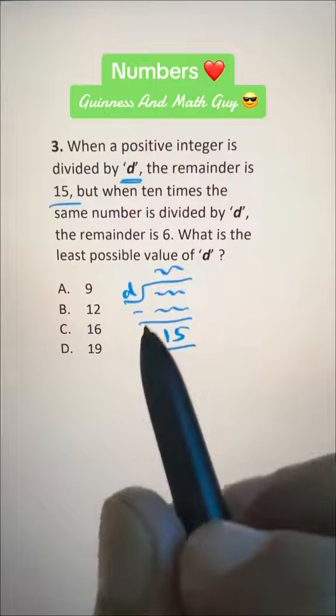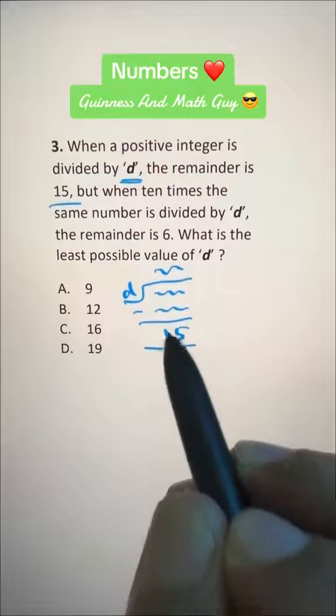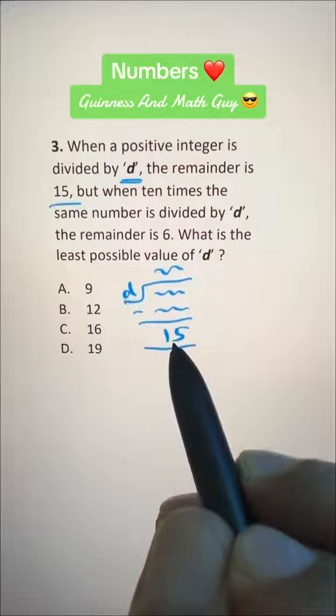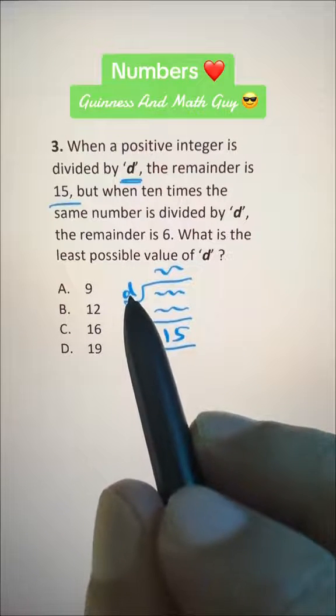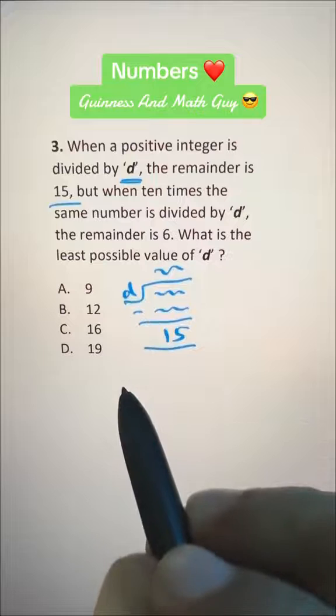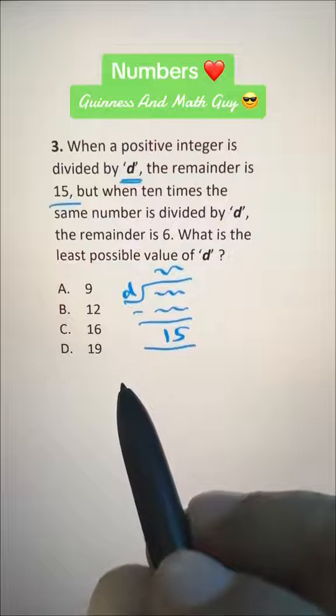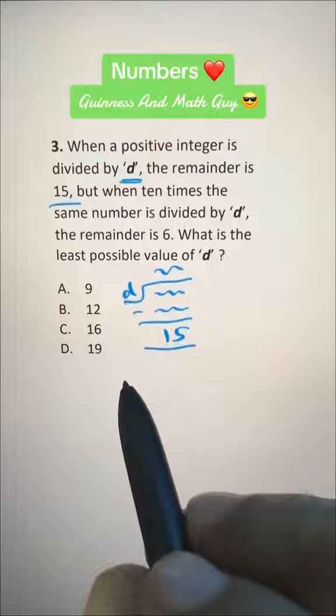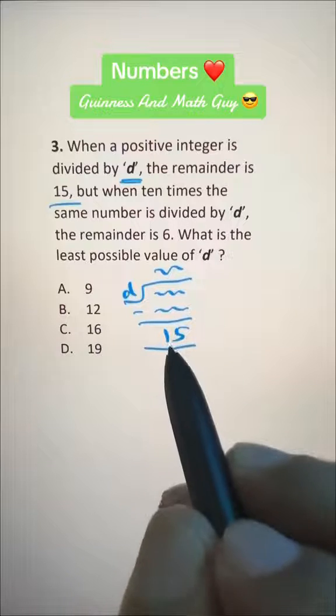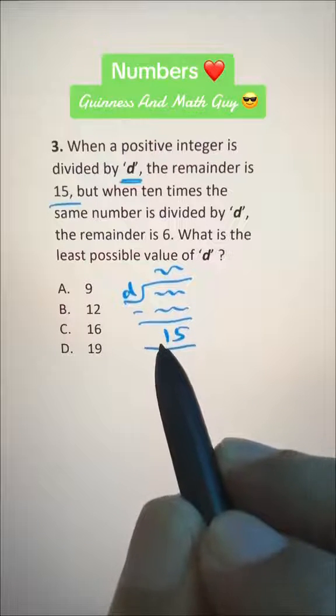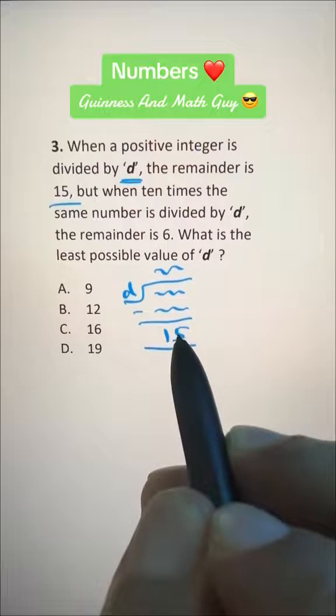We should know that any number's remainder is always less than that number. If you're dividing by 7, the remainder can be any number from 0 to 6, not 7 or above. So if the remainder is 15, D must be greater than 15.